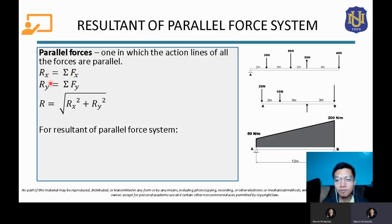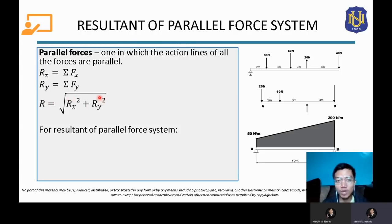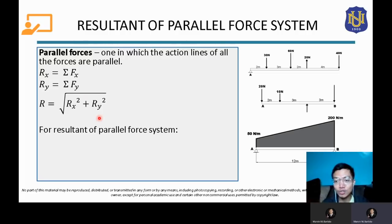In a parallel force system, forces are either all vertical or all horizontal, meaning only one of the two equations — RX or RY — will be used. It will automatically equal your resultant. If all forces are vertical, RX is zero, so RX squared cancels and R equals RY. Similarly, if RY is zero, R equals RX. There is no theta for the resultant since forces are purely horizontal or vertical.